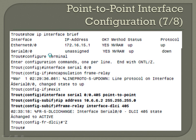Exit out of there. Interface serial 0.0.405 point-to-point jumps us into sub-interface configuration mode. Configure the IP address 10.6.6.2 255.255.255.0, frame-relay interface DLCI 405. You'll see that the DLCI 405 state changes to active, then you can jump out of there.